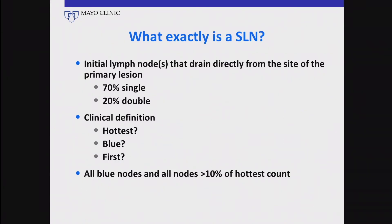But what is the clinical definition? Is it the hottest lymph node? Is it the bluest lymph node? Is it the first lymph node that's either hot or blue? All of those are correct in their own way. The way we define it clinically is a little different from the way it's defined physiologically. Clinically, a central lymph node is any lymph node that is blue, and all lymph nodes that have greater than 10 percent of the count of the hottest lymph node. I think that is a safe definition based on our current technique, and when I do my dictations, I always verbalize that this is what I'm calling a central lymph node.